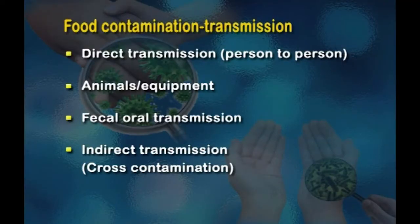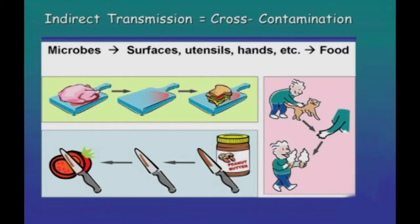Indirect transmission is nothing but cross contamination — the transfer of contaminants from one food to another through a non-food surface such as human hands, equipment, and utensils. If equipment or utensils are unclean, organisms can spread from one food to another. Therefore, to ensure food is free from cross contamination, raw foods need to be kept separately from cooked foods.